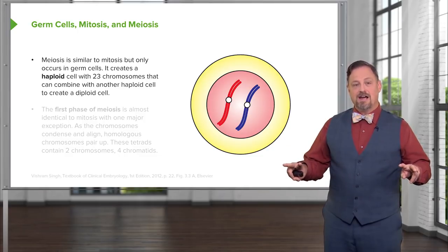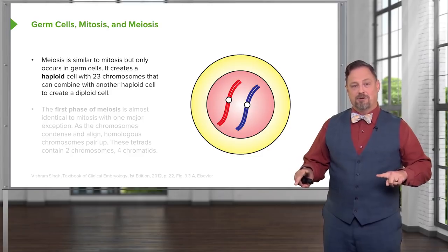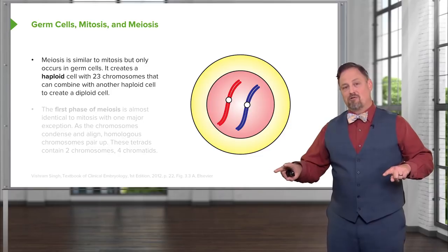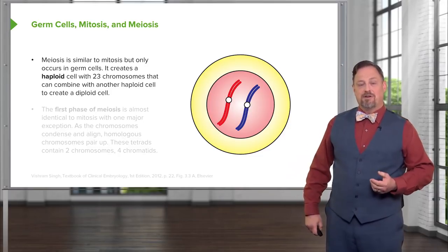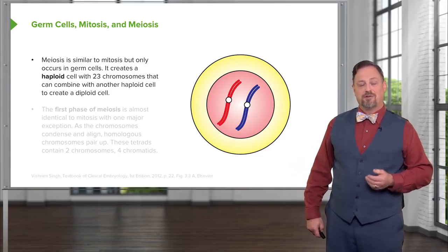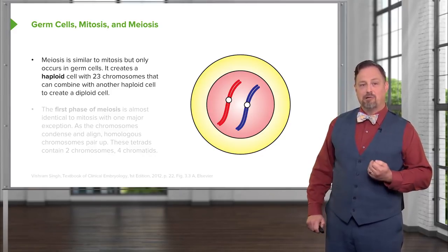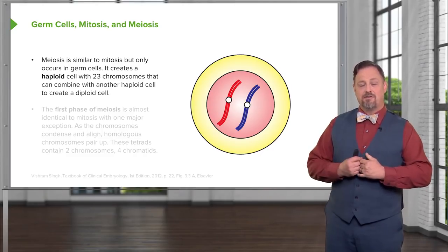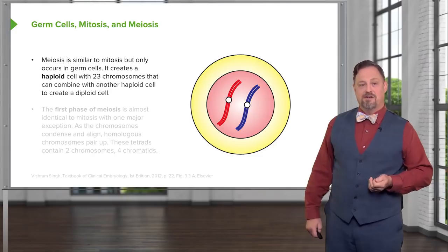So we have four cells with either a maternal chromatid one, a paternal chromatid one, or a maternal chromatid one or paternal chromatid one. Essentially, we're going to have four cells result from the process of meiosis instead of two and this is going to create a haploid cell of 23 chromosomes that can then combine with another haploid cell to create a new individual.